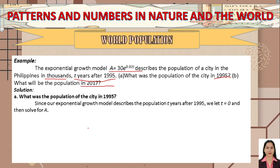Since the model describes years after 1995 and we want 1995 itself, we let t = 0. Using the exponential growth model, we have A = 30 × e^(0.02t).